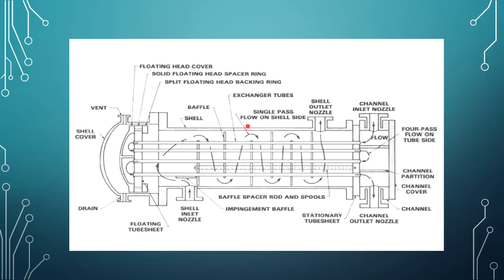Next, these are images of the shell and tube heat exchanger showing the different parts. There are tubes covered with a shell, shell nozzle outlet, shell nozzle inlet, tube side inlet, and baffles which provide support for the tubes. These are the main important parts of the shell and tube heat exchanger.